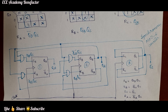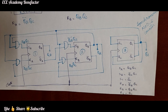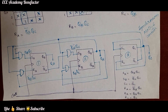In this way we have easily designed a synchronous mod 6 counter. A brief review: first draw the state diagram, use 3 SR flip-flops, build the transition table with present state, next state, and flip-flop inputs, simplify the 6 K-maps, and finally design the logic diagram. I hope you have understood the class. If you have any queries, you can post in the comment section. Thank you, good luck students.